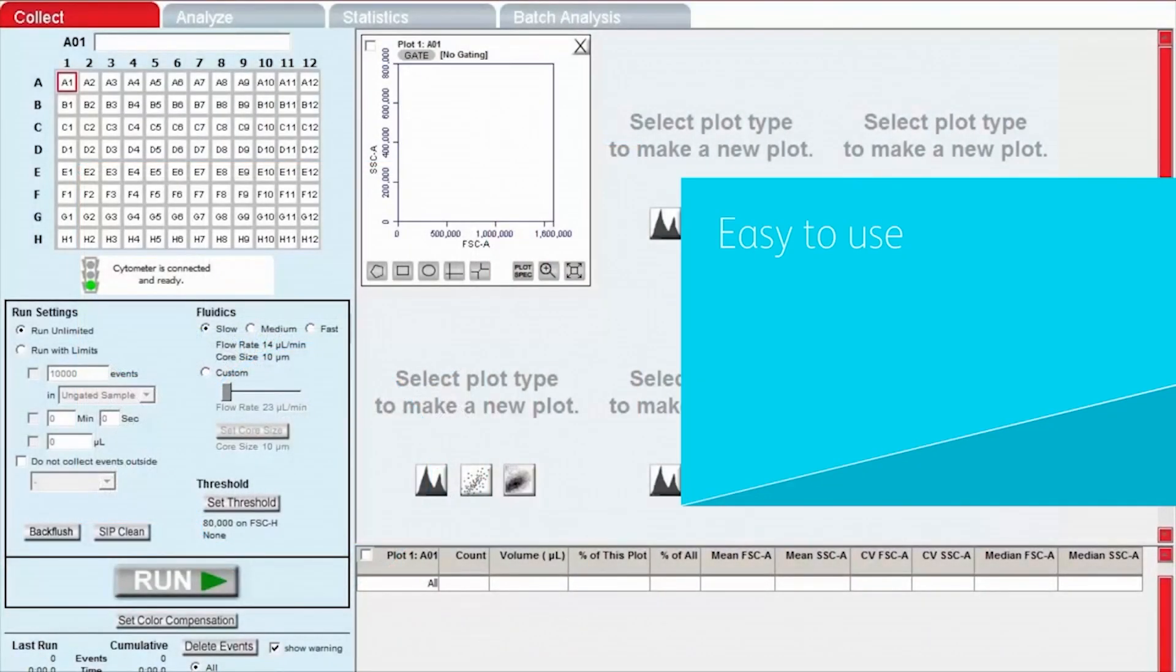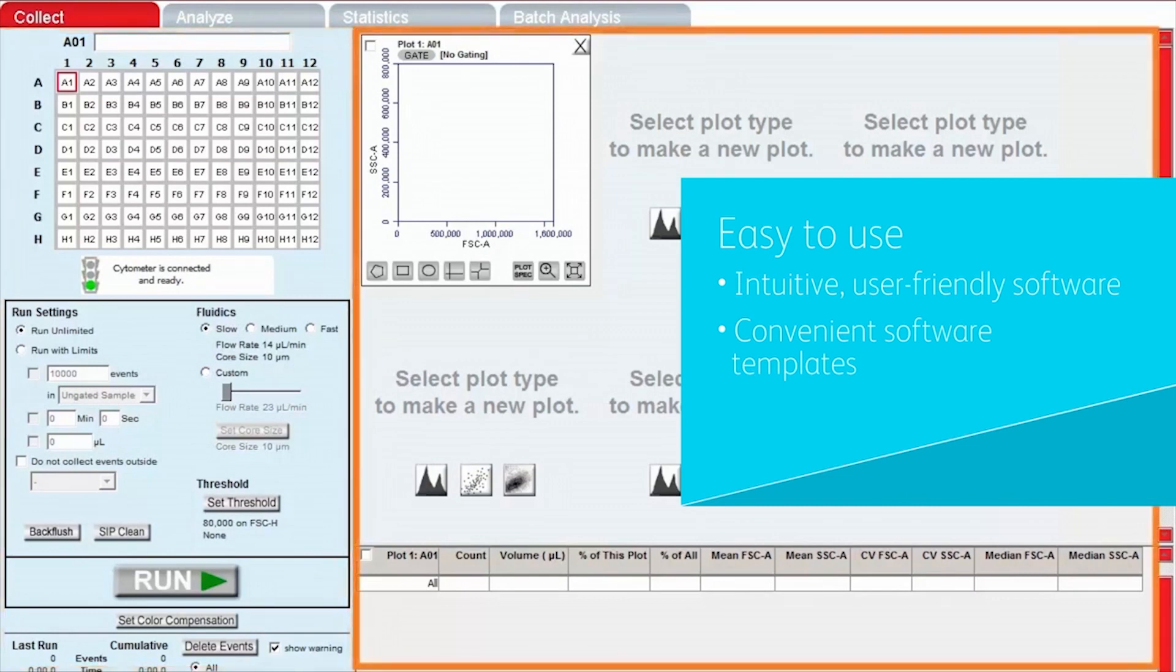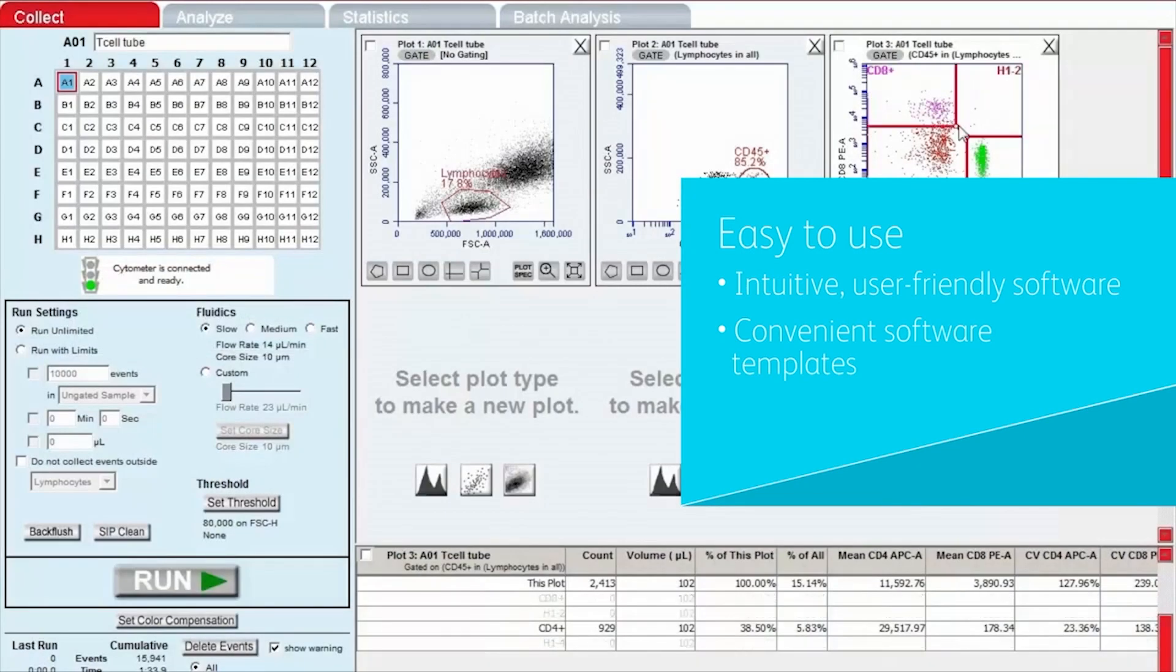The user-friendly software with automated functions is easy to learn and intuitive to use. With convenient software templates for over 30 applications, you can simply load and run your sample. The data shows up automatically in predefined workspaces, regions, and gates with compensation settings and labels, which can be exported in the format you prefer.